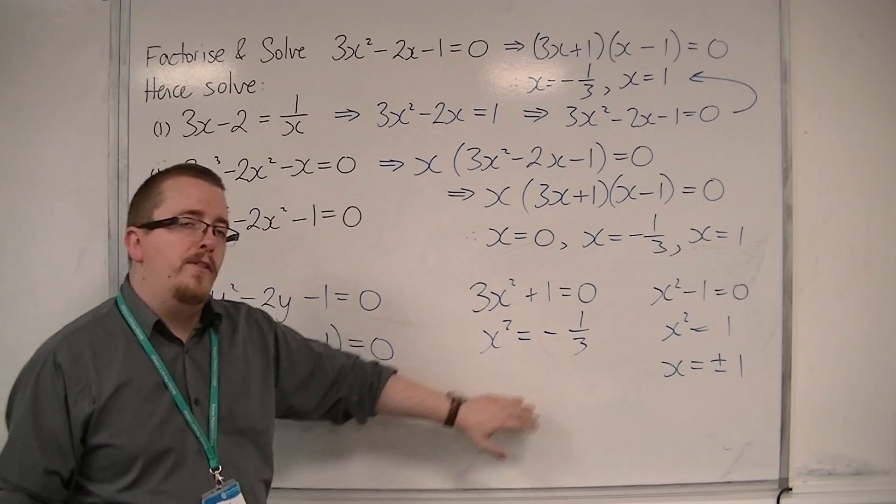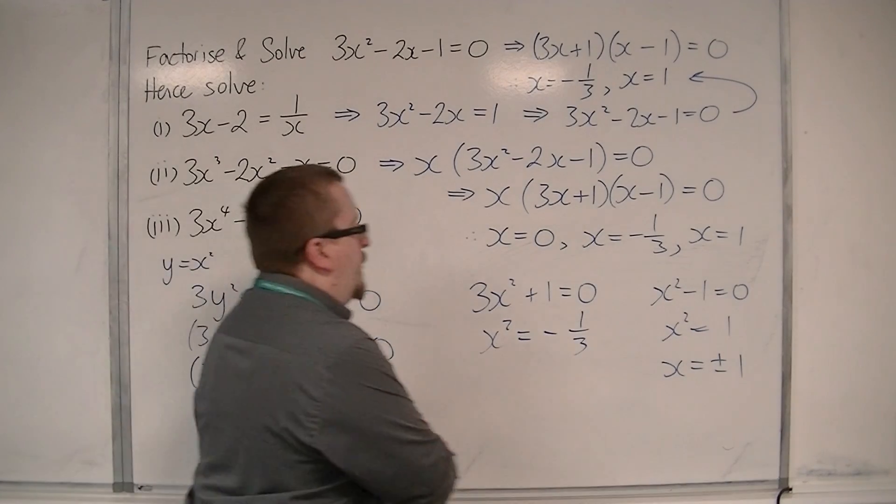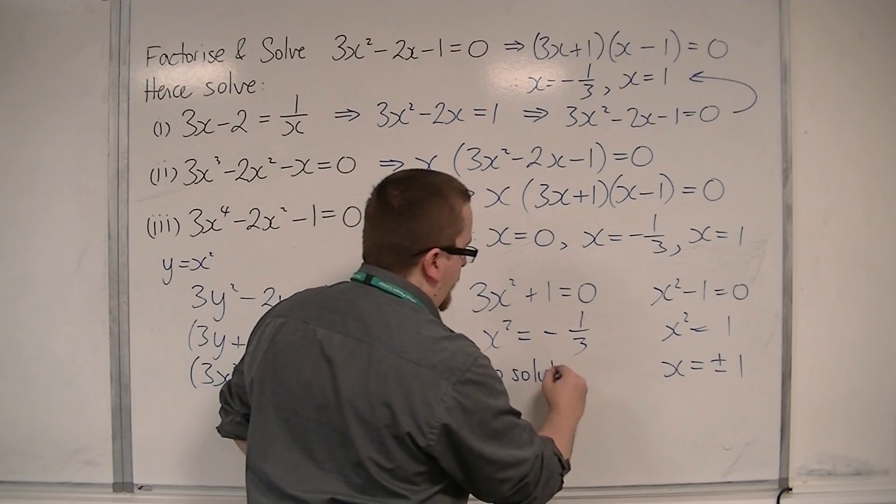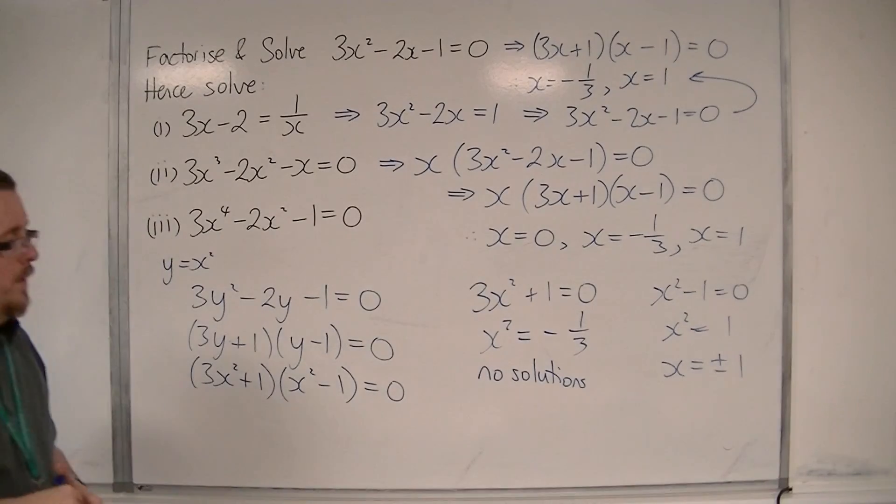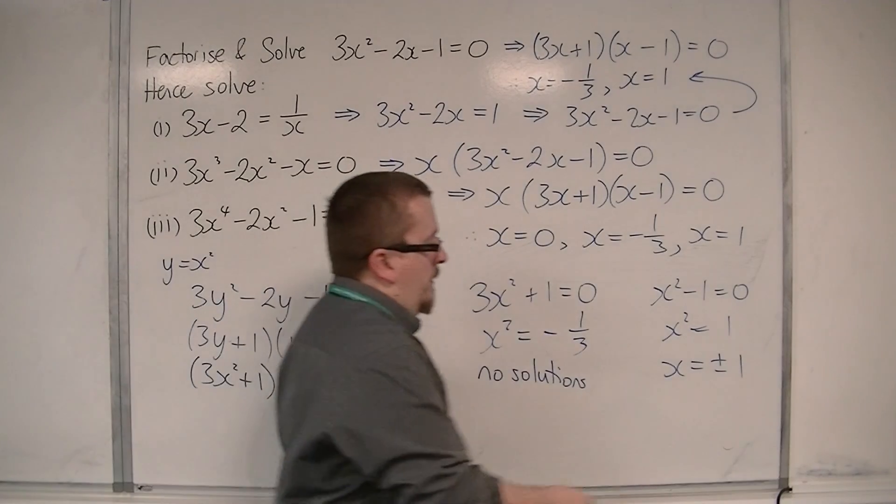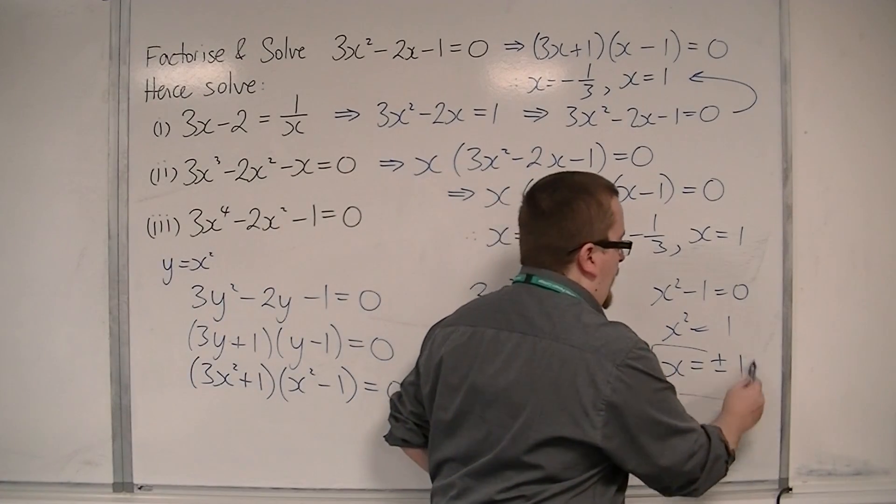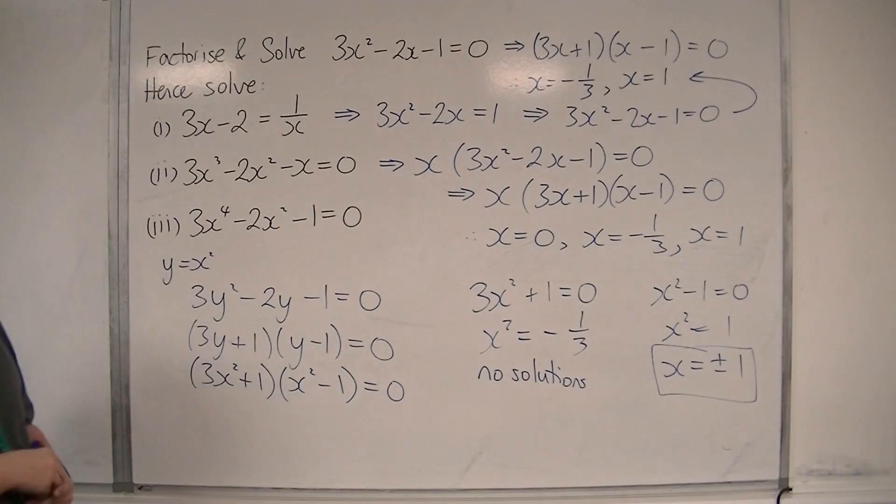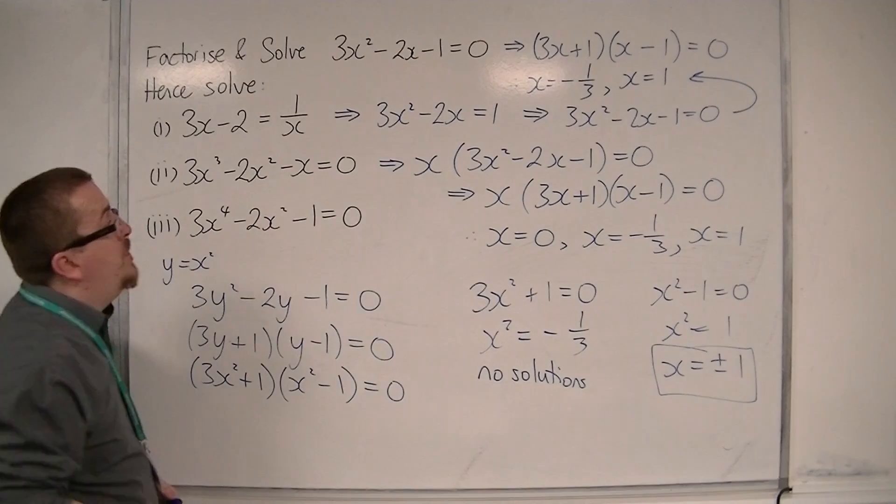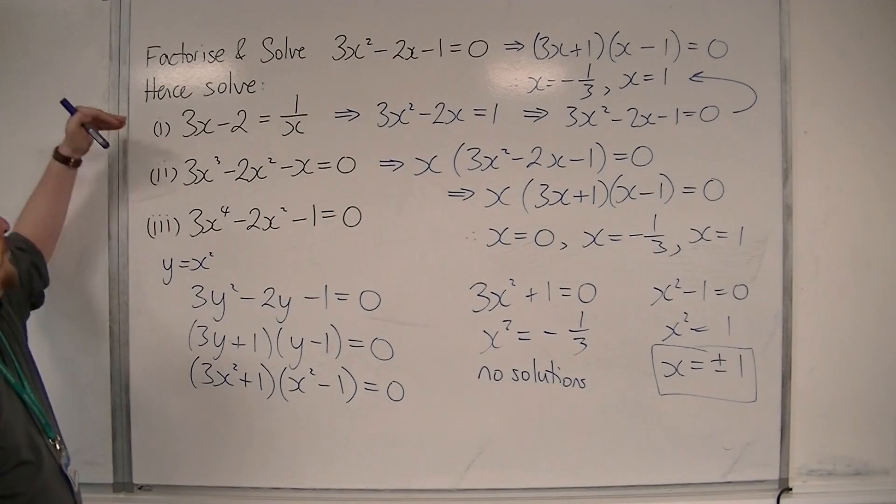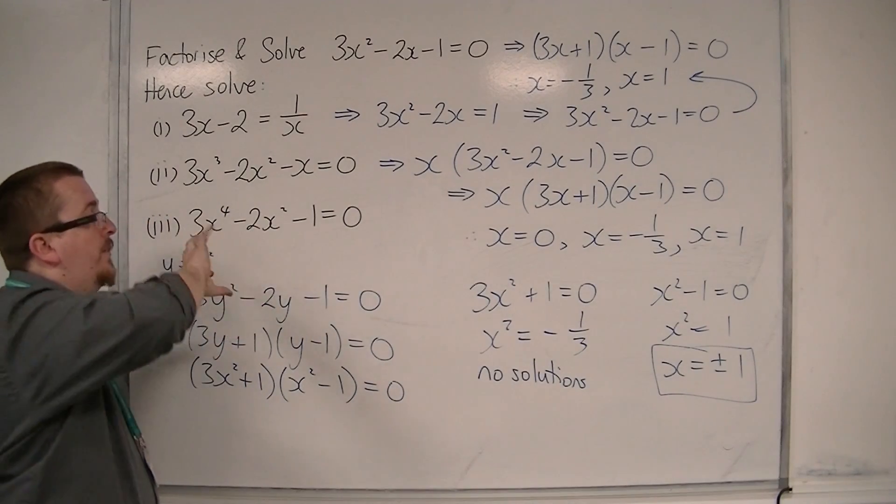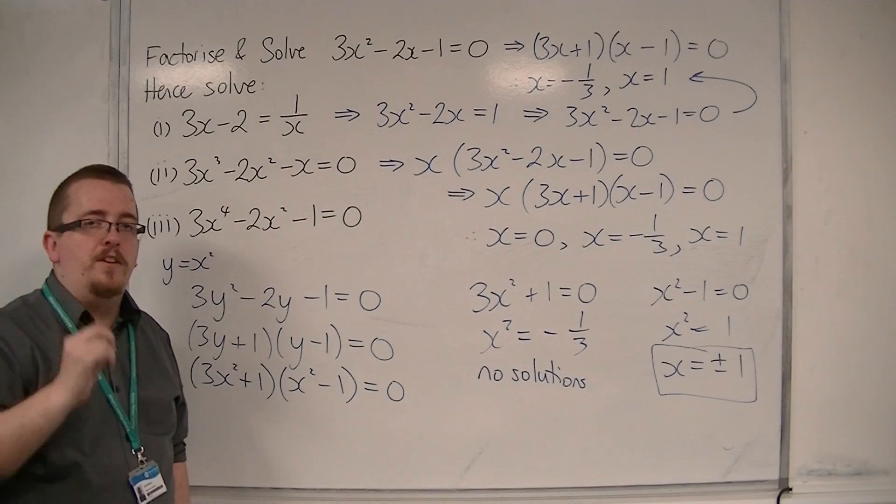However, x squared is equal to minus 1 third, you can't square root a negative number, and so there are no solutions to this equation. The only solutions to number 3 are plus and minus 1. And that is how we can use our solutions from the original quadratic to solve each of these three stranger quadratics in disguise, these hidden quadratics.